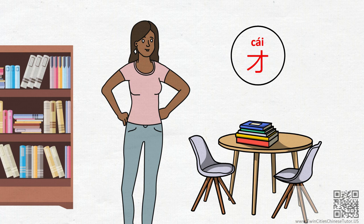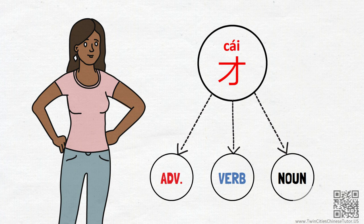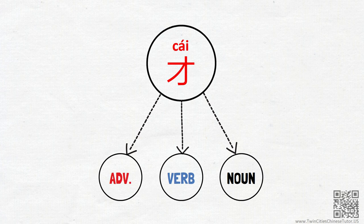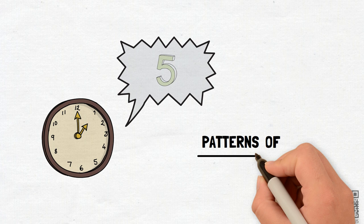才 can be used as an adverb, a verb, or a noun, and the meanings are so different that they seem to have no connection at all. To help Lucy better understand the way 才 is used in Chinese and to improve her reading comprehension, in the next five minutes, let's break down and simplify the ways 才 is used as an adverb and a verb in Chinese. Let's start.